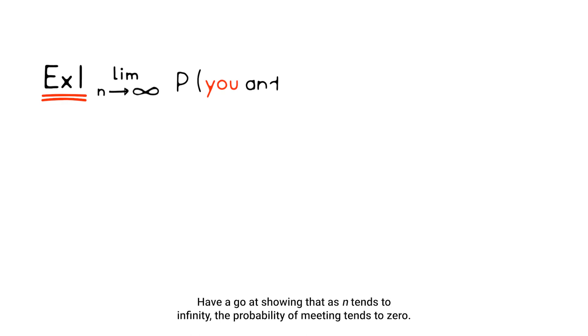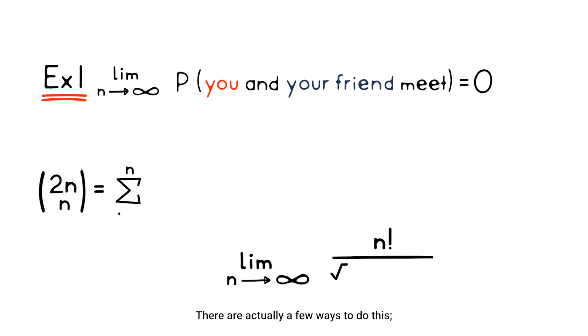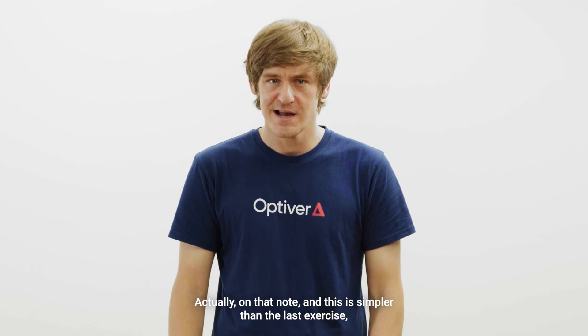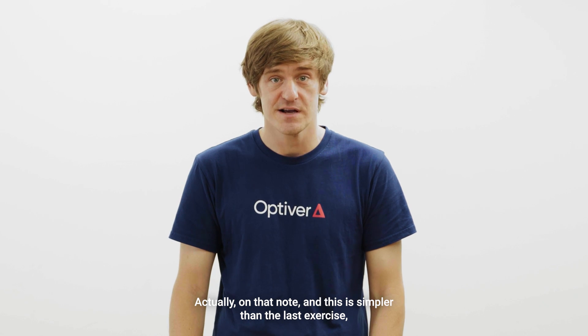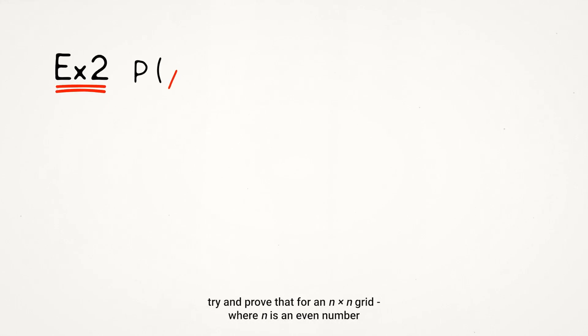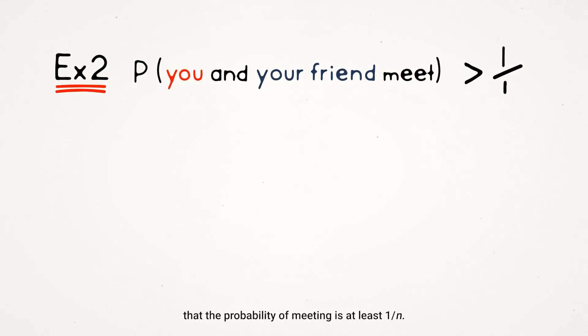Now it's your turn to prove it. Have a go at showing that as n tends to infinity, the probability of meeting tends to 0. There are actually a few ways to do this. See if you can find a nice, quick elementary method. And then a natural follow-up question also arises. How quickly does the probability approach 0 as n gets large? Actually, on that note, and this is simpler than the last exercise, try and prove that for an n-by-n grid, where n is an even number, that the probability of meeting is at least 1 on n.